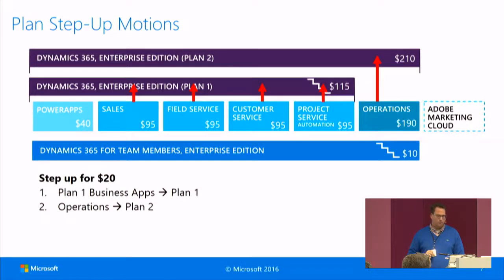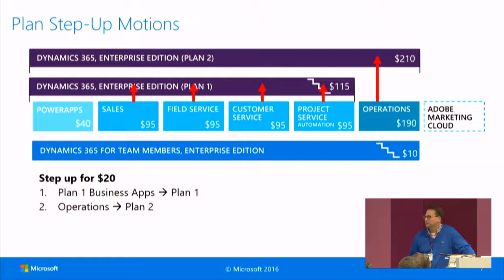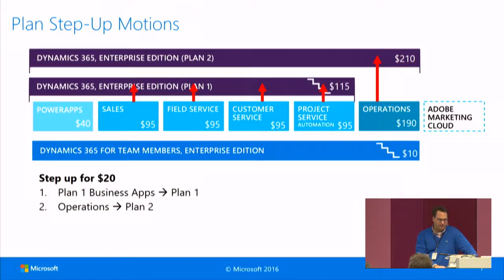On the bottom, we have the light users — the team member users. They start at $10, and they get cheaper and cheaper the more you buy. The idea is to spread them all around the company so that everyone has a Dynamics 365 user doing things like time and expenses. If you go into four-digit numbers, the price can be as low as $4 a month.